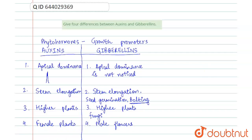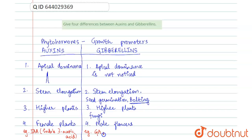Now we will see examples of both. IAA, which stands for indole-3-acetic acid, is an example of auxin. Gibberellins are generally abbreviated as gibberellic acid (GA). There are various chemicals in this category and they are differentiated as gibberellic acid-1 and gibberellic acid-3, among others, but these are the most prominent ones.